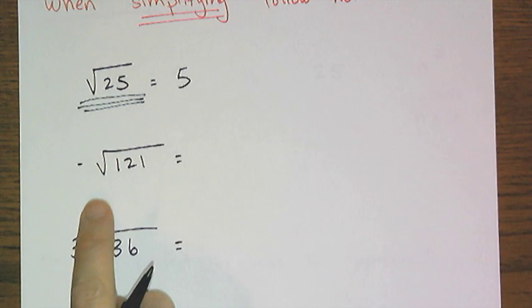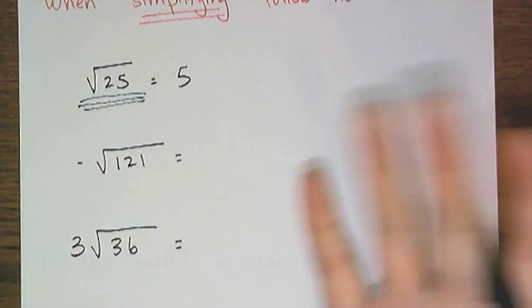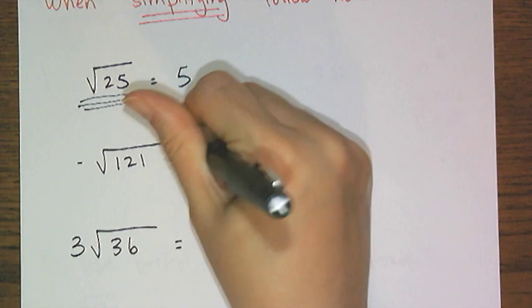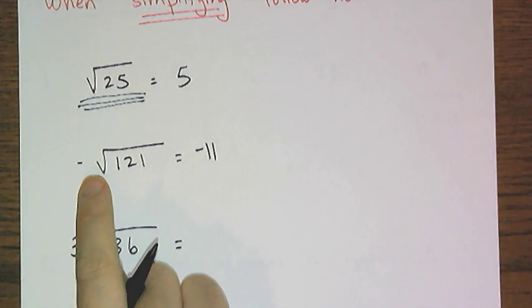Whereas this one here, with the negative on the outside, tells me I don't want plus or minus 11. I only want negative 11, because the notation is asking for the negative root.